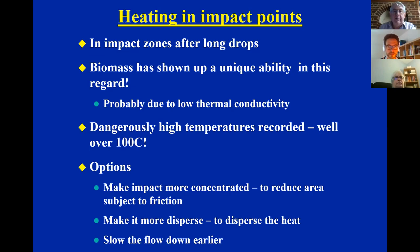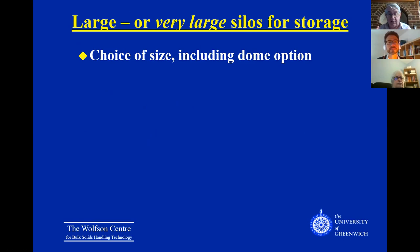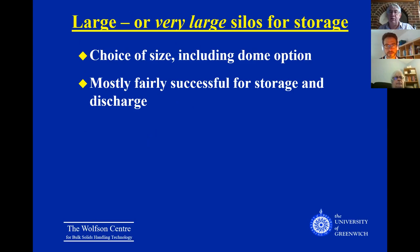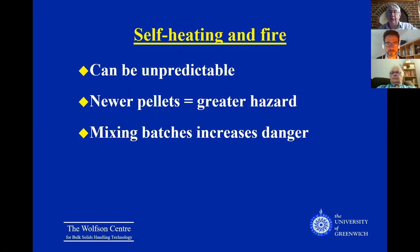Large silos for storage have proved troublesome. Most biomass materials need to be kept covered because they are moisture sensitive, so large silos and domes lend themselves well. However, problems arise with self-heating because large piles don't lose heat well, and also with sizing of explosion vents — this has been tough to overcome.